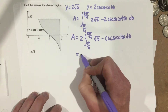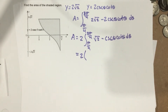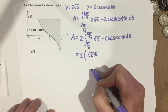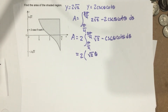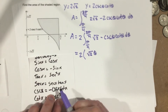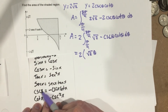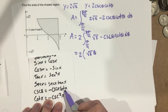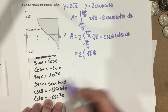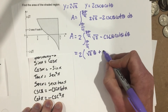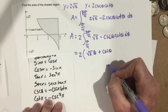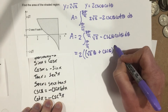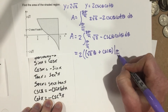Now we're going to actually do the integration. It's going to be 2, and then when we integrate, root 2 will become root 2 theta. If we look at our derivatives, we see that negative cosecant x cotangent x is the derivative of cosecant x, meaning the antiderivative of negative cosecant x cotangent x is cosecant x. So this is just going to be plus cosecant theta.